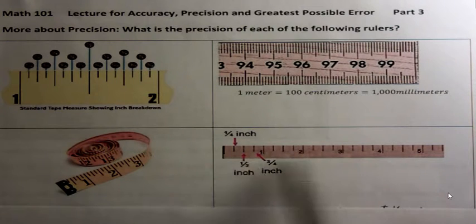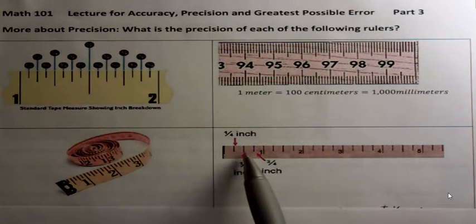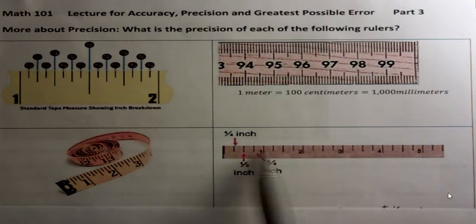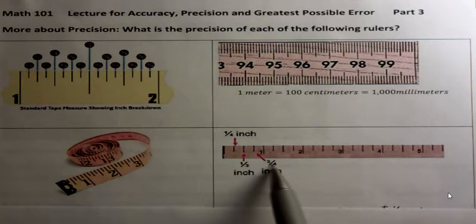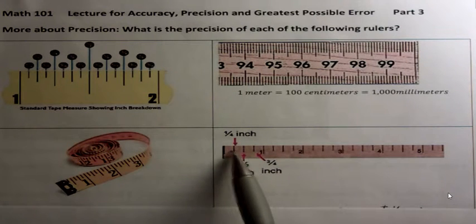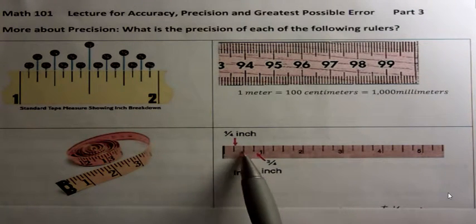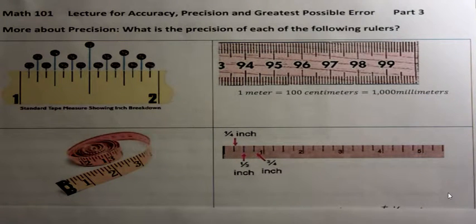Take a look at this ruler down here. This ruler has half inches and quarter inches. If I was to measure something with this, the most precise I could get would be to the one fourth, right? That's as precise as we get. The smallest measurement we have is one fourth of an inch. That's all the precision I could give you with that.